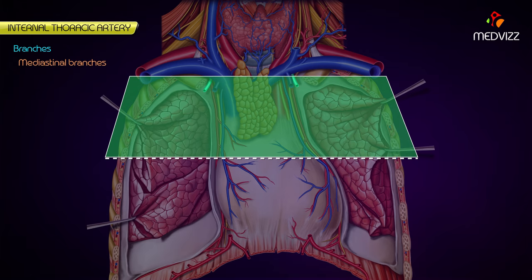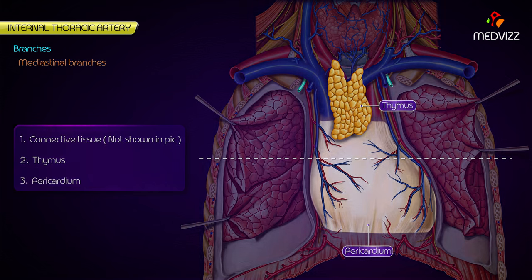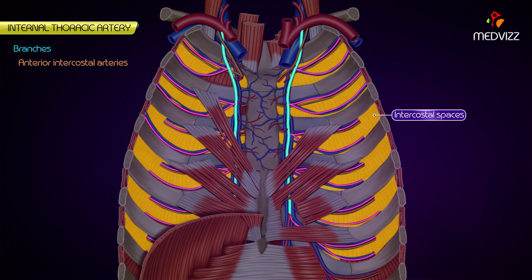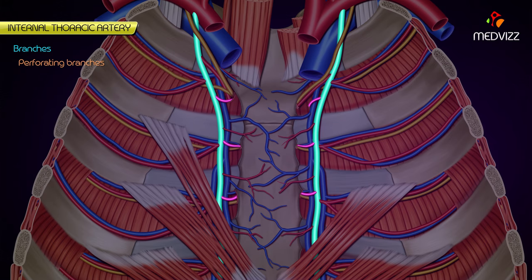Mediastinal branches are small and supply the connective tissue, thymus, and front of the pericardium. Anterior intercostal arteries are two in number for each of the upper six intercostal spaces. Perforating branches accompany the anterior cutaneous branches of the intercostal nerves.